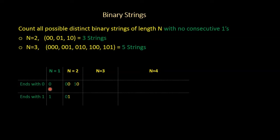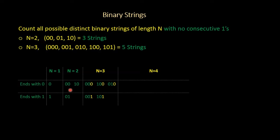Let's do the same thing for n equal to 3. We take all the strings from n equal to 2 and append 0 to them, and then take only those strings which end with 0 and append 1 to them. That way we form all the strings of length 3 which do not have any consecutive ones. Let's count how many strings we formed — 3 (the total number of strings from n=2) plus 2 (the number of strings ending with 0), giving us 5 strings total.